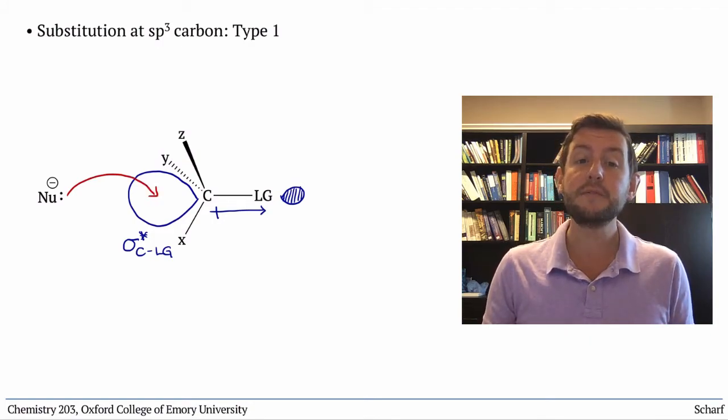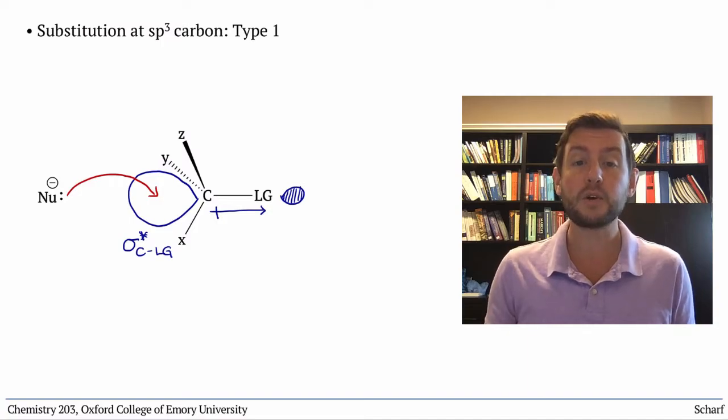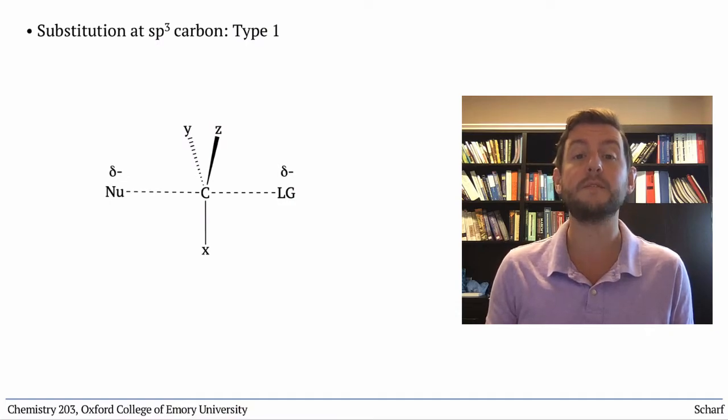As the nucleophile puts electrons into sigma star, the corresponding bond to the leaving group breaks simultaneously with the new bond being formed.